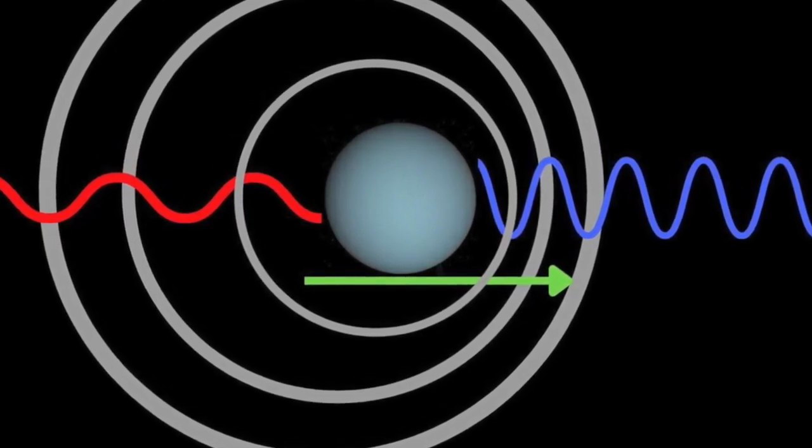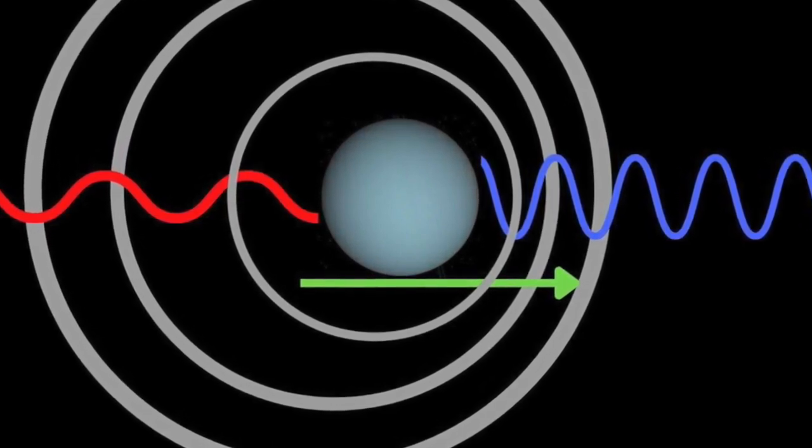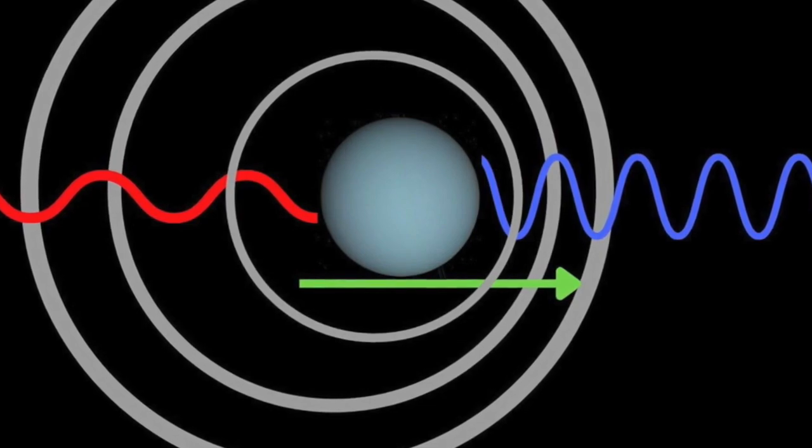Hence a decrease in frequency in light means a change in color from blue to green, or green to yellow, or yellow to orange, or orange to red.